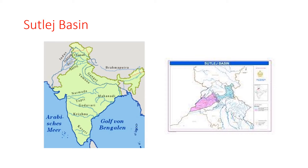Division of the Plains of Northern India: the three great rivers — the Sutlej, the Ganga, and the Brahmaputra — divide the Northern Plains into three parts: the Sutlej Basin, the Ganga Basin, and the Brahmaputra Basin. A river basin is an area watered by a river and its tributaries.